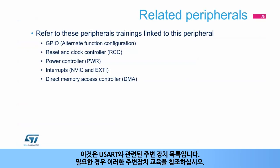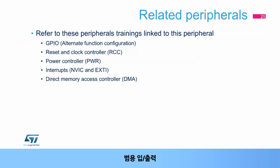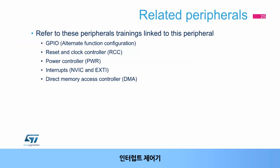This is a list of peripherals related to the USART. Please refer to these peripheral trainings for more information if needed: General Purpose Inputs and Outputs, Reset and Clock Controller, Power Controller, Interrupts Controller, and Direct Memory Access Controller.